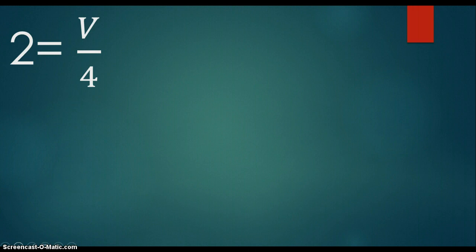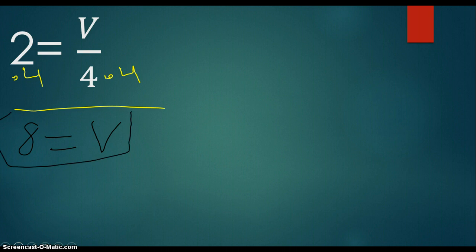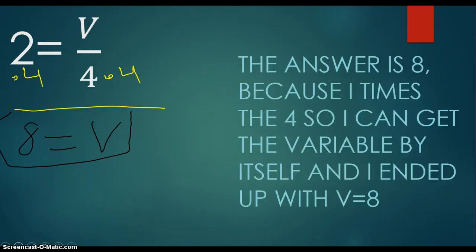Okay, so for this next question, the question was what is the voltage across the bulb? So the equation I got was 2=V/4. The 2 will be for the amps, the 4 will be for the ohms, and the V will be for the voltage. Now I need to find the voltage. And what I needed to do was get the V by itself. So what I did was times by 4 on each side. And I got 8=V. So there we go. I got V by itself. And that is my final answer. So the answer is 8 because I times the 4 so I can get the variable by itself. And I ended up with V=8.